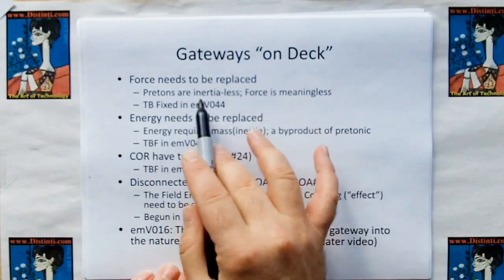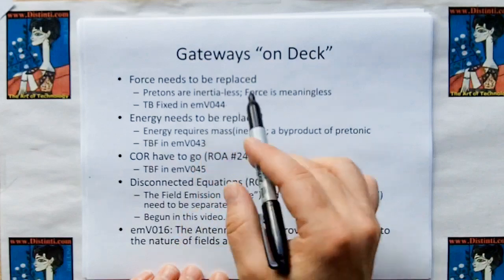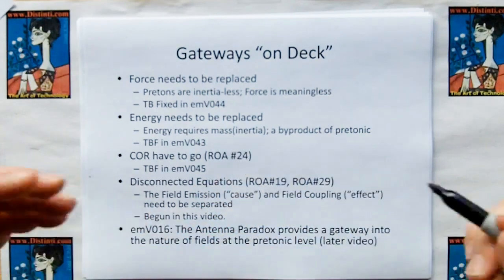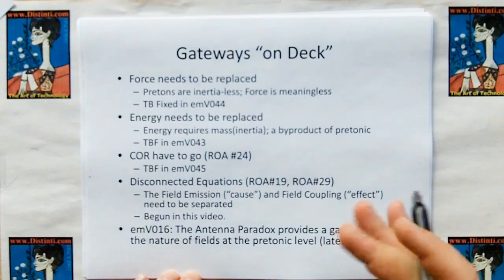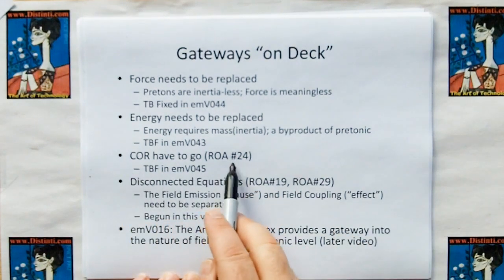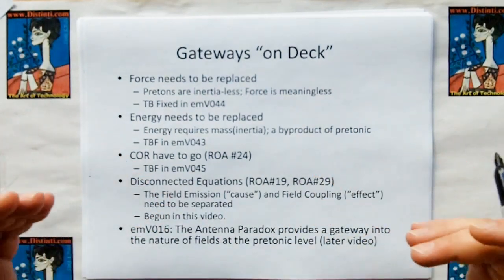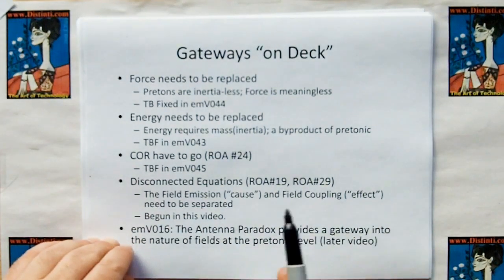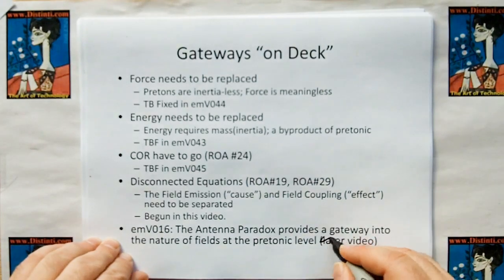So now we still have some gateways on deck. These are gateways introduced in previous videos that we haven't used yet. And one of the gateways is force needs to be replaced because pretons are inertial, so force is meaningless. And I don't know about these video numbers. These are to be announced. Energy needs to be replaced. Energy requires mass, but we're talking about inertial particles. So the definition of energy at the pretonic level is meaningless. Constants of relation have to go, rule of acquisition 24. And all equations of new electromagnetism are still disconnected equations. We need to break them up into cause and effect. This will happen in this video. And in video number 16, the antenna paradox provides a gateway to the nature of fields at the pretonic level.